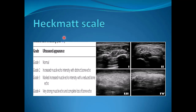In patients with myopathy, the Heckmatt scale is used for grading the affection by ultrasound. Grade 1 is the normal appearance with visible bone shadowing. Grade 2 shows some increased echogenicity with a well-defined distinct bone echo. Grade 3 shows reduced bone echo that is still identifiable with increased muscle echogenicity. In grade 4, there is marked increased echogenicity with complete loss of bony shadowing and bone echo.